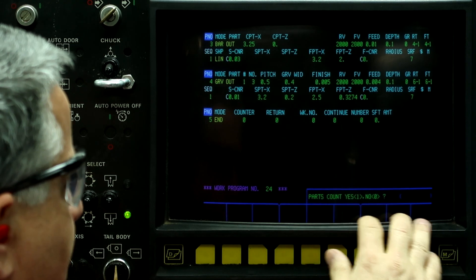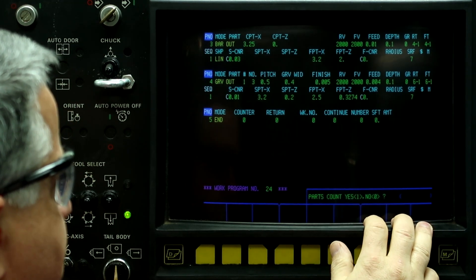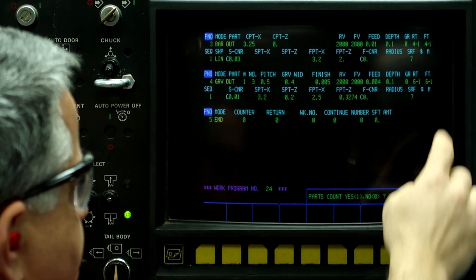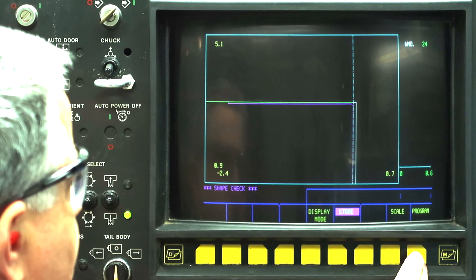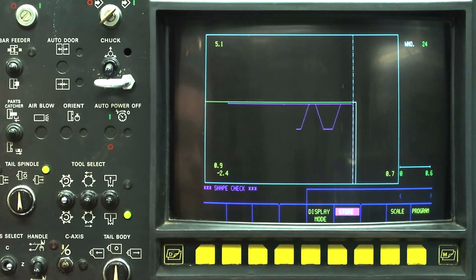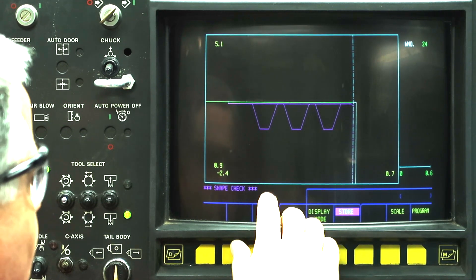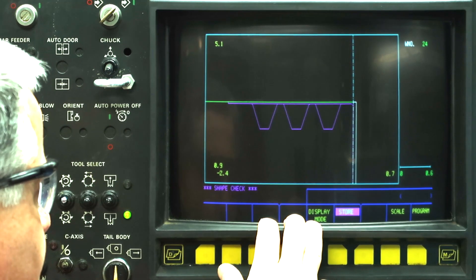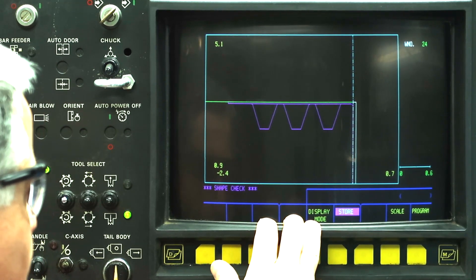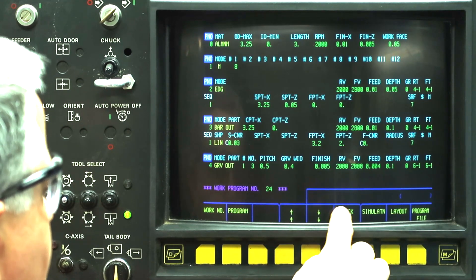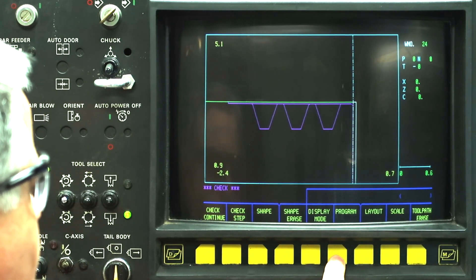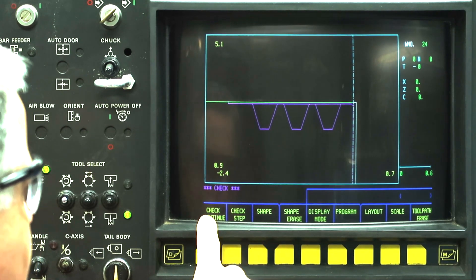This two-line process programmed three of those grooves, roughing and finishing. So let's go to the right button, figure check. And there's the grooves. So now let's run the toolpath check. Go back to program. Go to check. And then check continue.